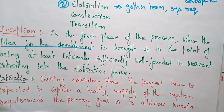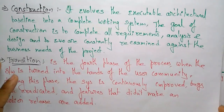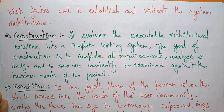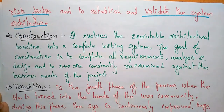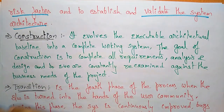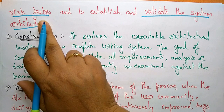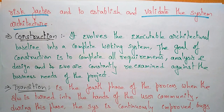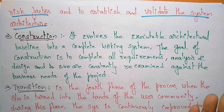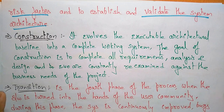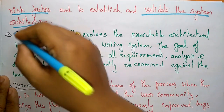The primary goal of Elaboration is to address known risk factors and to establish and validate the system architecture. You analyze the risk factors and validate the architecture. Whatever product you are going to start, first think about what are the risk factors and what problems might arise — those are identified and addressed in the Elaboration phase.